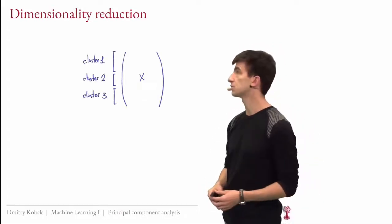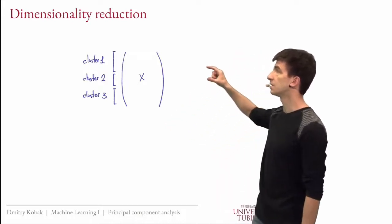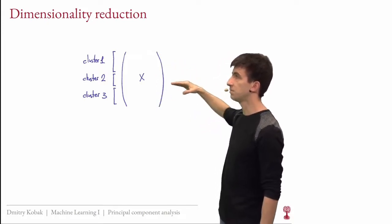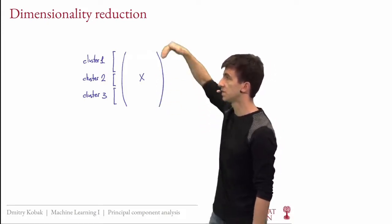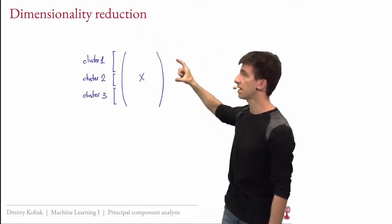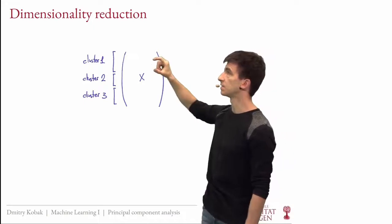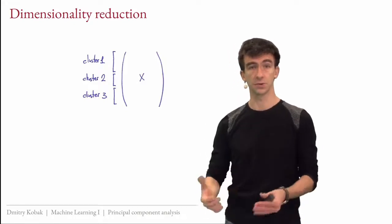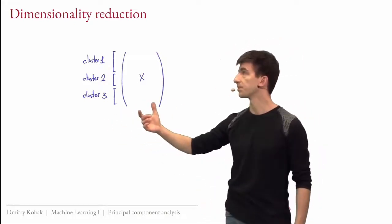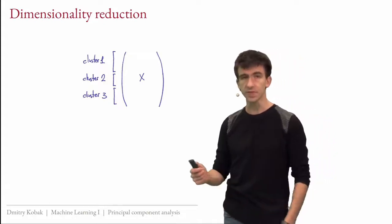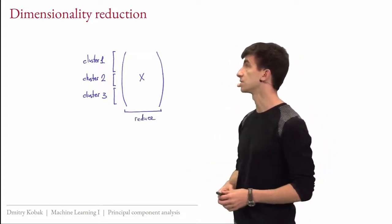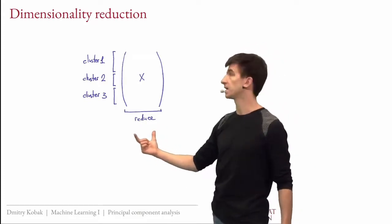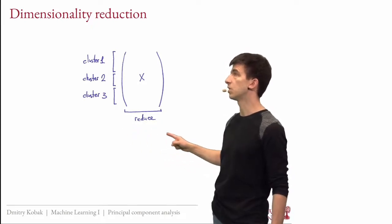Last week we talked about clustering. In clustering, we want to split the rows of X — which correspond to samples in the dataset — into several groups: cluster one, cluster two, cluster three, for example. Today we're going to talk about a different thing: dimensionality reduction, which operates on the features — the columns of the X matrix. We want to reduce the number of columns in X.